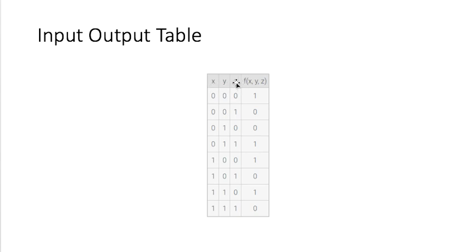Suppose I have an input-output table here. You have three inputs: x, y, z. Then for these three inputs, the output will be like this. If x, y, z are all 0, the result will be 1.